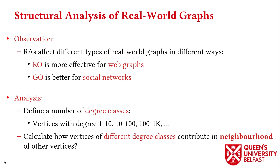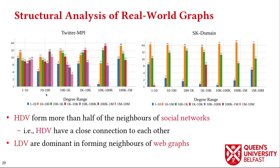To analyze that, we define degree classes such as vertices with degree 1 to 10, 10 to 100, and so on, and calculate how vertices of different degree classes contribute to the neighborhood of other vertices. The resulting plots show, for example, that for the Twitter graph and vertices in degree class 10 to 100, 4% of neighbors have degree 1 to 10, 17% have degree 10 to 100, and so on. These plots show that high-degree vertices form more than half of the neighborhood of vertices in social networks — in other words, high-degree vertices have a close connection to each other in social networks.